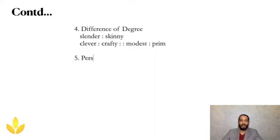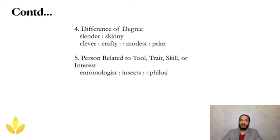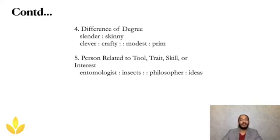Person related to tool or trait, skill or interests. An entomologist is a person who is interested in insects, whereas a philosopher is someone interested in ideas and thinking. You should see the relation between the person and their interest or tools of trade. An entomologist's tool of trade is insects — without insects, being an entomologist is useless. Similarly, without ideas, philosophy is meaningless.